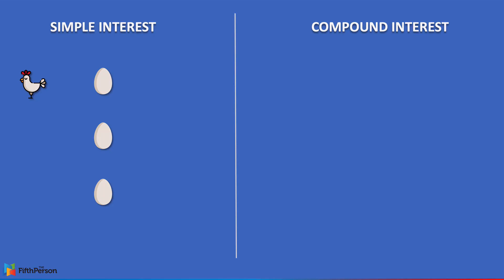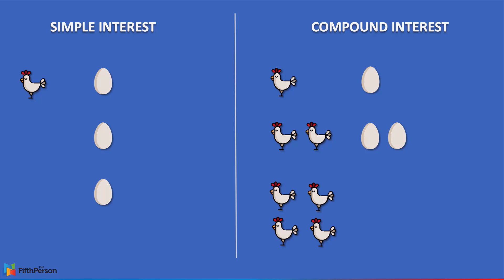But compound interest is a little bit different. On the first year it may look the same — you bought a hand and the hand produces an egg for you. But instead of consuming it, you decided to delay gratification. You leave the egg to hatch and turn into another hand. So by the beginning of the second year, you get a total of two hands, and two hands produce two eggs. Same thing — you have a family of four, but you decide to keep it and delay gratification. So at the beginning of the third year, you have four hands and the four hands produce four eggs in total.